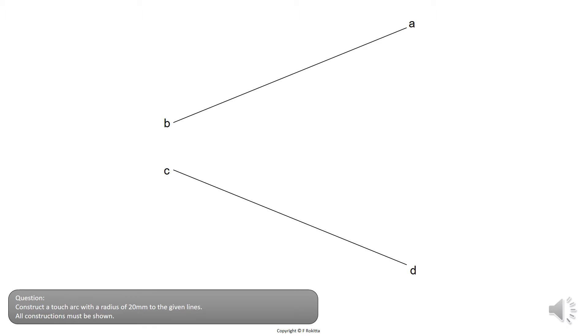On your paper you will find line AB and line CD provided to you. These two lines are convergent to one another, but they do not touch. The same method that you have used to construct a touch arc to an angle will be applied in this exercise.